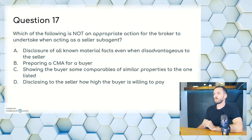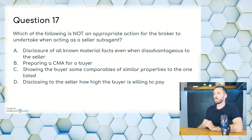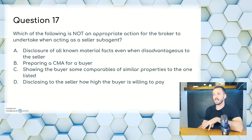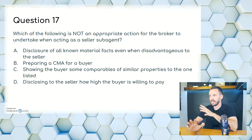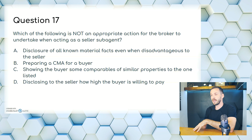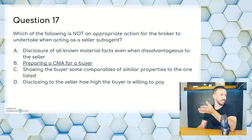Question 17. Which is not an appropriate action for a broker acting as a seller sub-agent? A, disclosure of all known material facts even when disadvantageous to the seller; B, preparing a CMA for a buyer; C, showing the buyer comparables of similar properties; or D, disclosing to the seller how high the buyer is willing to pay. A sub-agent should not prepare a CMA for a buyer — a CMA is a competitive market analysis where you get comps for the home. The answer is B.